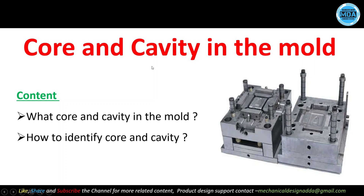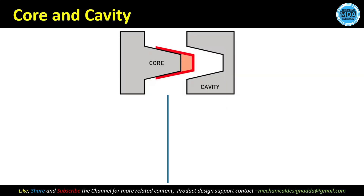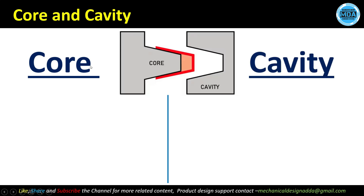Hello friends, welcome to Mechanical Design Adda. In this video we will discuss the core and cavity in the mold — what is meant by core and cavity and how we can easily identify them. Here you can see the two halves of the mold: this one is the first half and this one is the second half. If you assemble these two mold halves, there will be an empty space for the product shape. The red highlighted part is the required product.